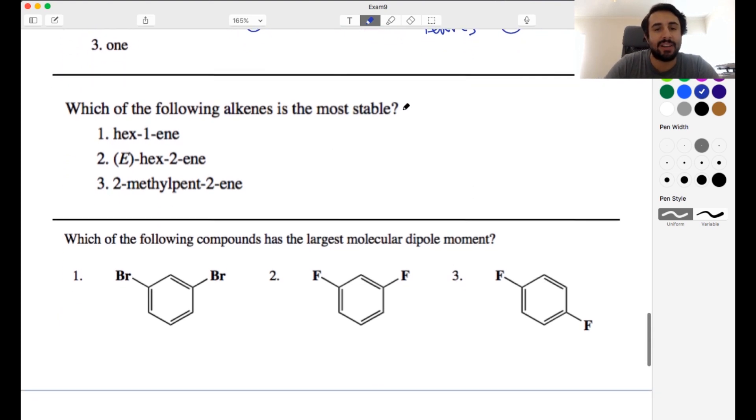Okay, next, which of the following alkenes is the most stable? So we've got 1-hexene. That would be this. Then we've got E-2-hexene. So that would be this. E because these higher priority groups are on opposite sides of the double bond. And then 2-methyl-2-pentene. So 2-pentene and also 2-methyl.